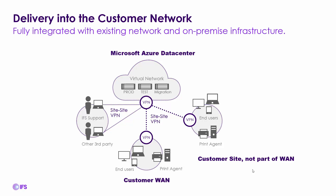When it comes to on-premise infrastructure, that remains the responsibility of the customer. IFS handles everything in the cloud, but you still have responsibility for the PCs, print agents. This shows a typical configuration using VPN tunneling to connect both IFS support organization or your partner, as well as your end users who are not on your local WAN in a building complex.